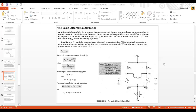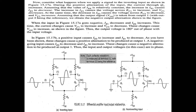Previously we covered the basic differential amplifier and discussed its basic operation. When considering two inputs — one inverting and one non-inverting — the inverting input produces an output at 180 degrees with respect to the input, and when the non-inverting input is used, we have an identical output produced.